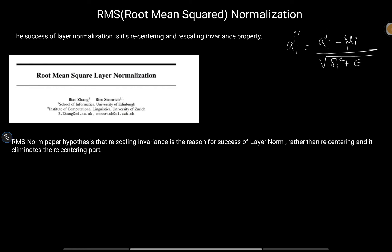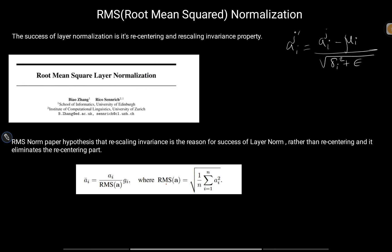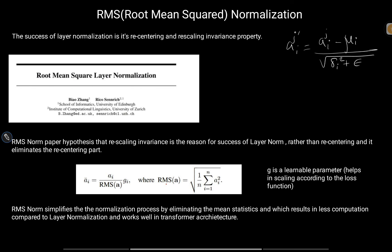RMS Norm uses the formula where data point A_i is divided by RMS(a), and it also has a learnable parameter G_i, similar to gamma and beta in batch and layer normalization. The formula for RMS(a) is the square root of (1/n) times the sum of A_i squared, for i from 1 to n. G_i is a learnable parameter that helps scale the input value according to the loss function. RMS Norm simplifies normalization by eliminating mean statistics, resulting in less computation and faster training compared to layer normalization.